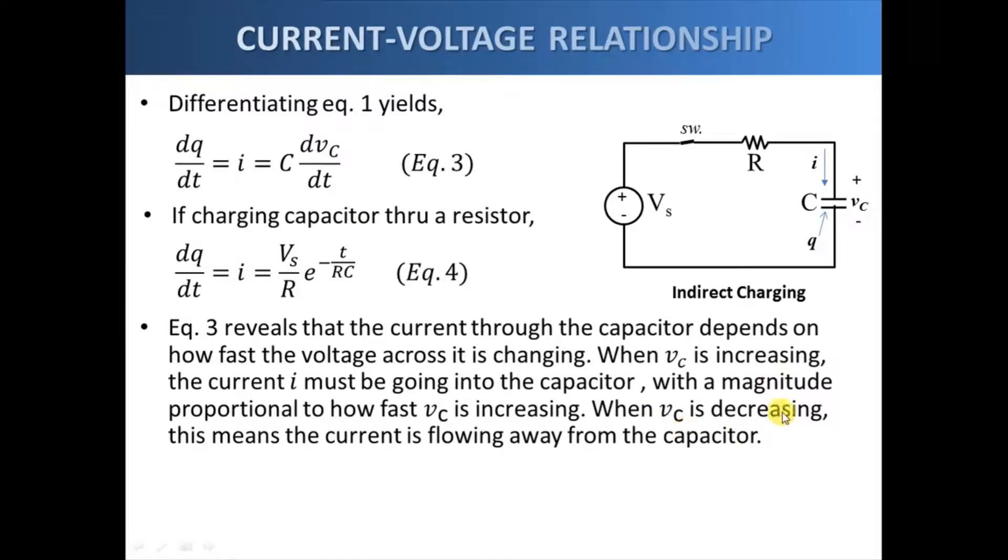When v sub c is decreasing, that is we have a negative slope, that means the current is actually flowing away from the capacitor. And how fast is the current flowing again depends on the magnitude of dv_c/dt.